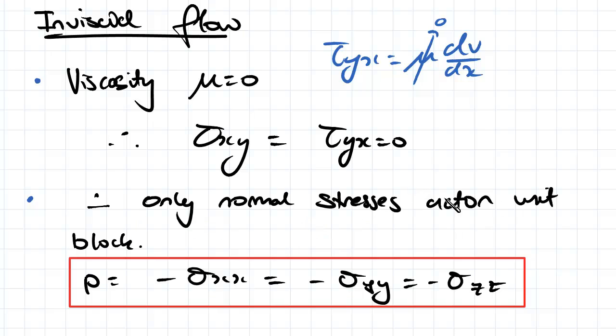So only normal stresses are going to be acting on our stress block. So in the last, in two videos ago, we had a look at all the stresses acting on our stress block, but here we've only got normal stresses. So we're just going to be looking at negative sigma xx, negative sigma yy, and negative sigma zz.